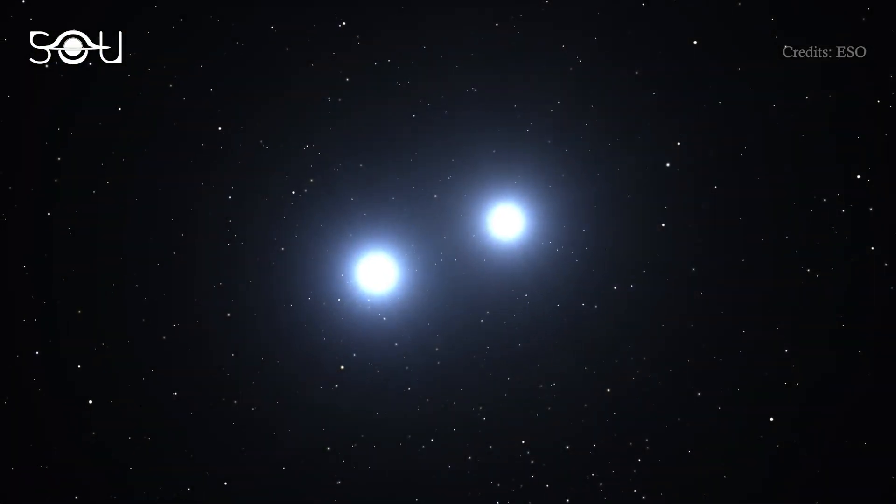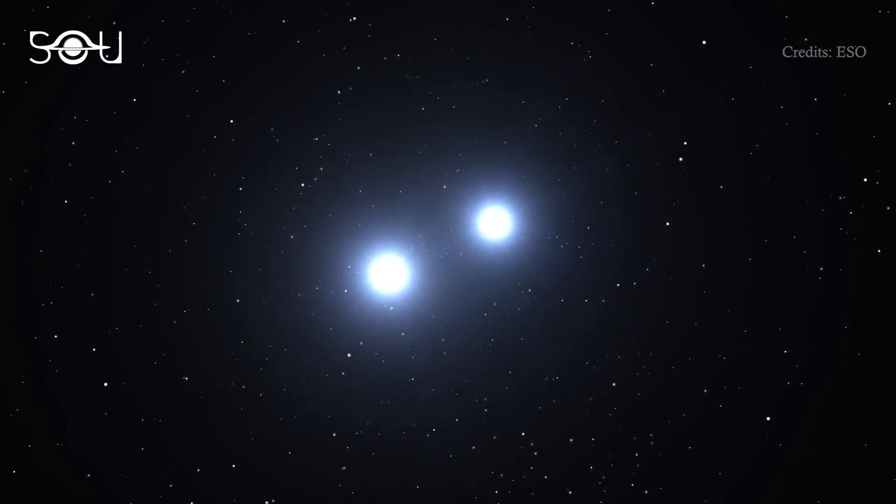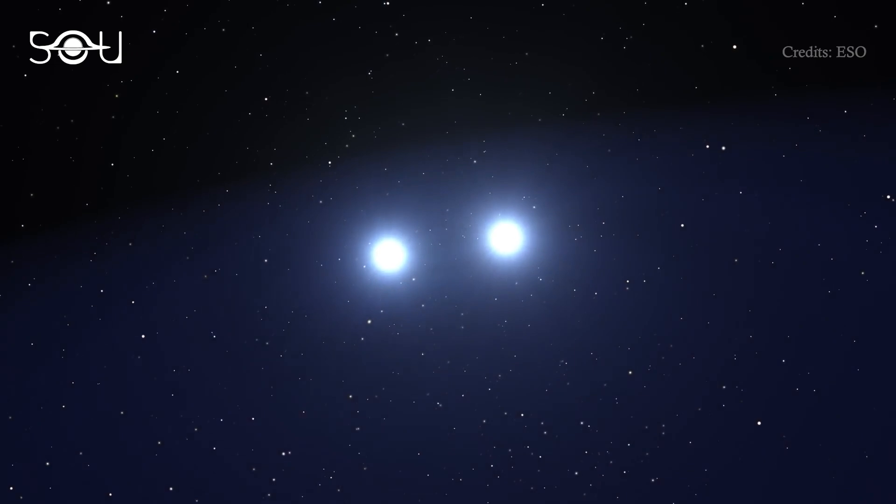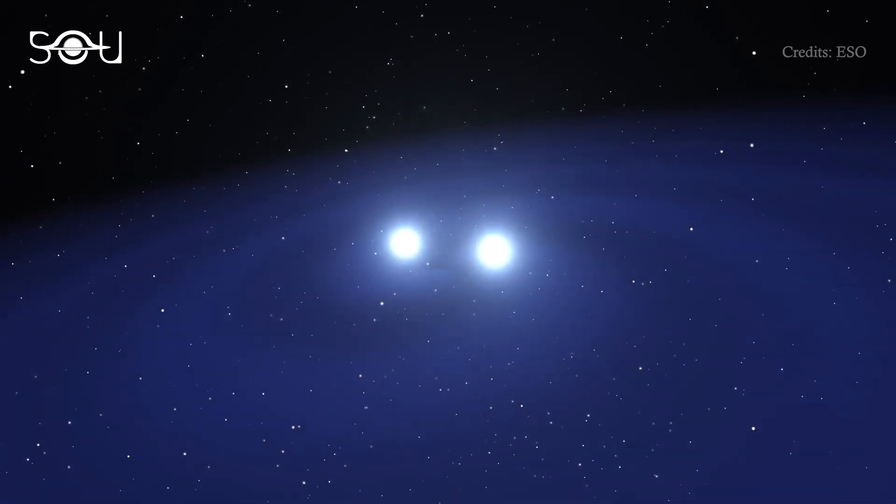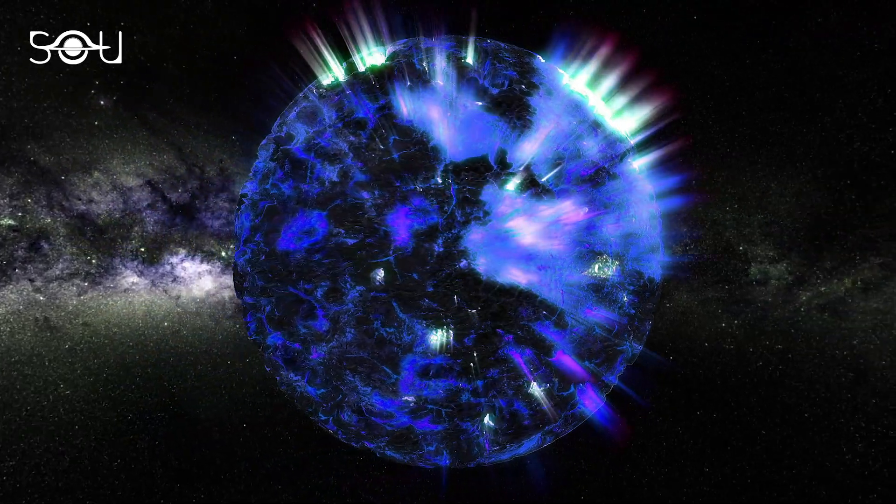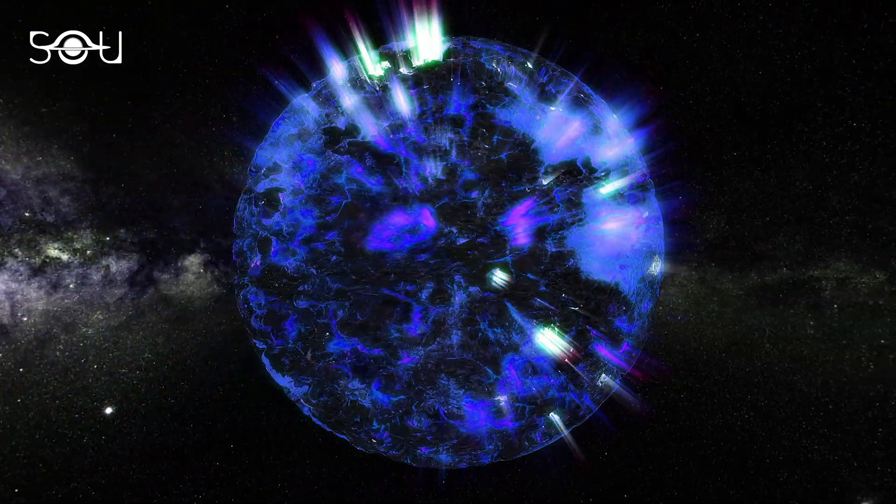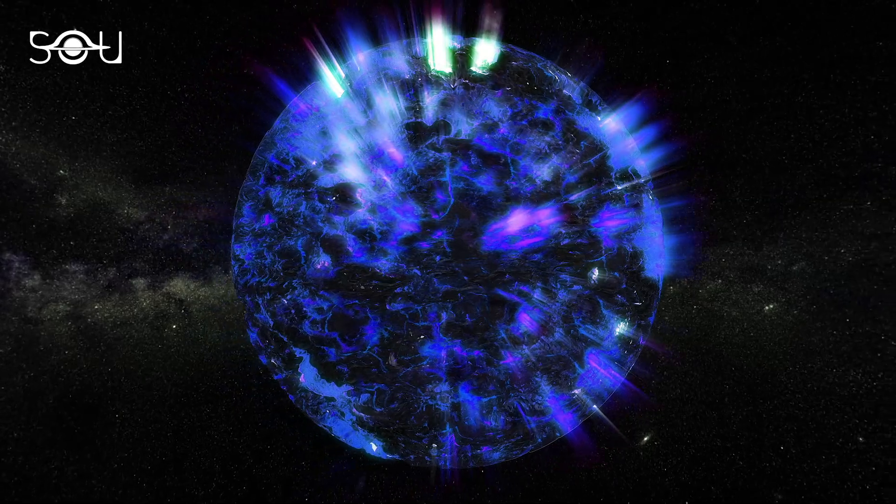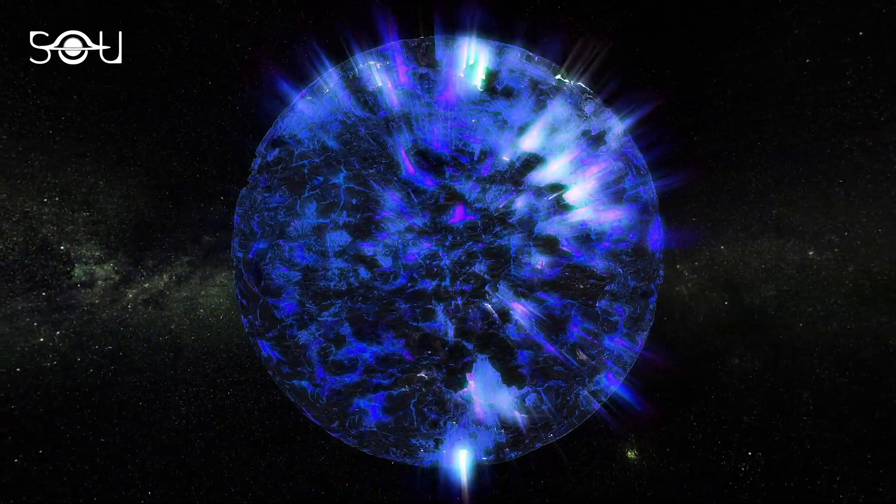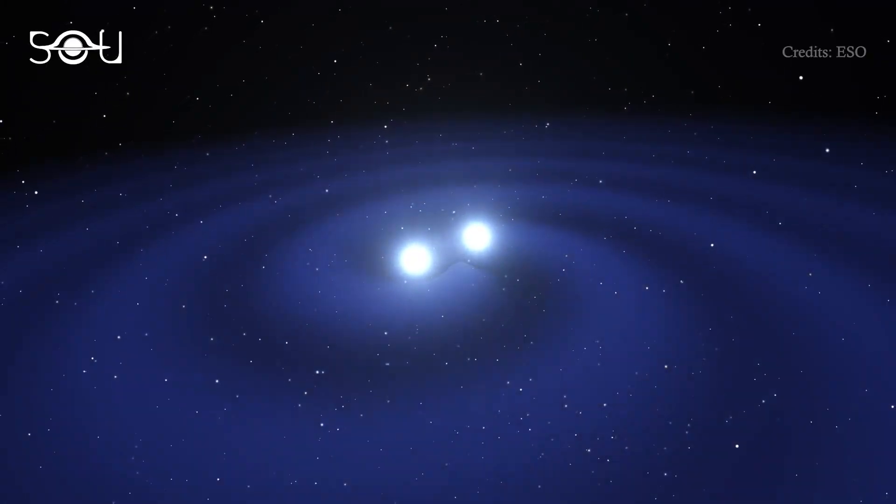However, there's also another event that can lead to the creation of gold in our universe. That event is the powerful collision of two neutron stars. Neutron stars are the dead stars that have an extremely high density. Within a radius of 10 kilometers, a neutron star can encapsulate mass that is 1.5 times that of the sun.